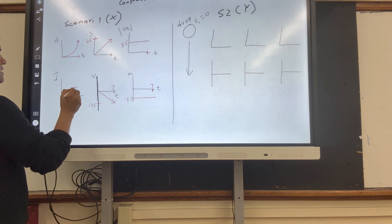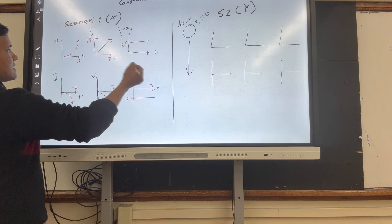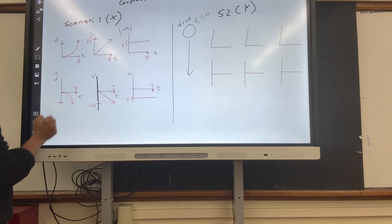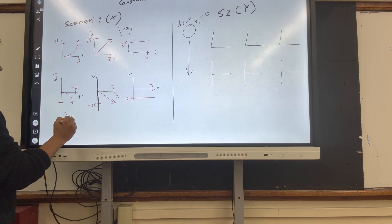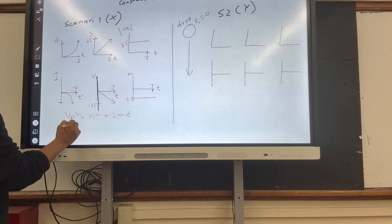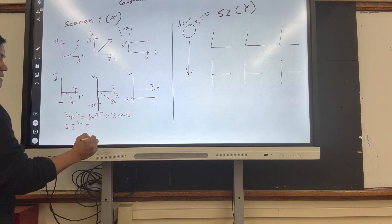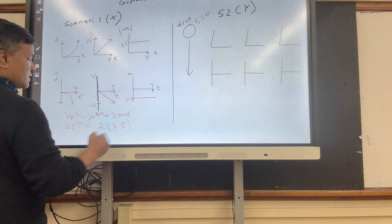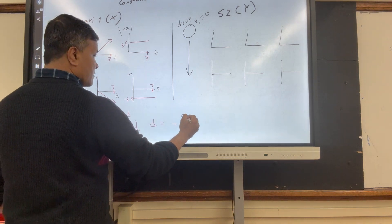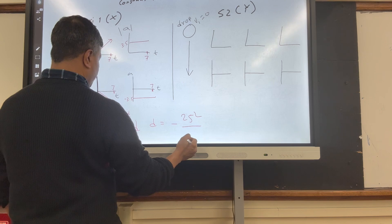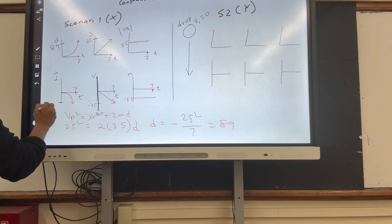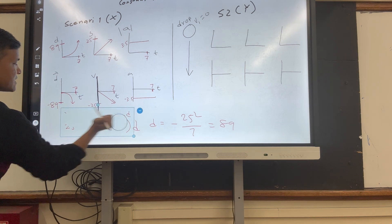The time is 7 seconds. Now, to find the distance, use vf² = vi² + 2ad. So 25² equals 0 plus 2 times 3.5 times d. That gives d = 25² divided by 7, which is 89 meters. So d is 89, and in the negative direction it's negative 89.